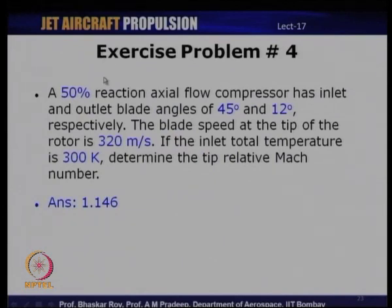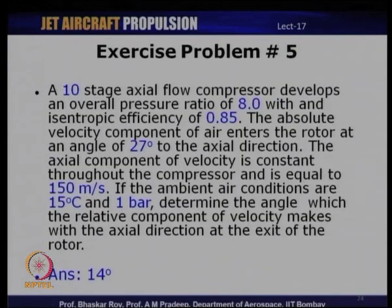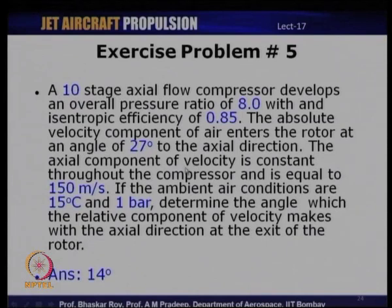Exercise problem 4: A 50% reaction axial flow compressor has inlet and outlet blade angles of 45° and 12° respectively. Blade speed at the tip is 320 m/s and inlet total temperature is 300 K. Determine the tip relative Mach number — answer: 1.146. Exercise problem 5: A 10-stage axial flow compressor develops an overall pressure ratio of 8 with isentropic efficiency 0.85. The absolute velocity enters the rotor at 27° to the axial direction, axial velocity is constant at 150 m/s, ambient conditions are 15°C and 1 bar. Find beta2 — answer: 14 degrees.